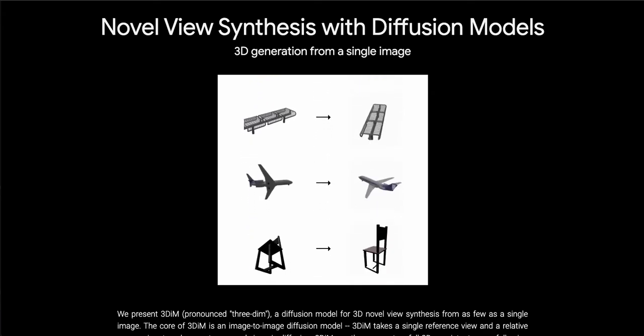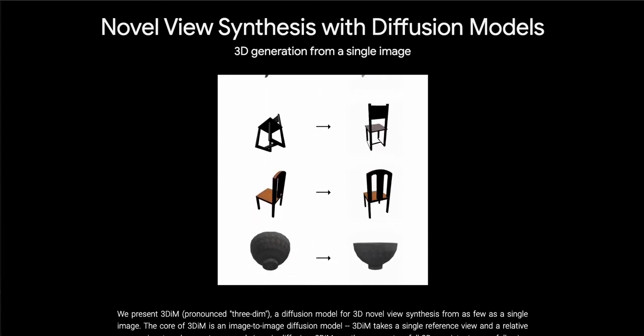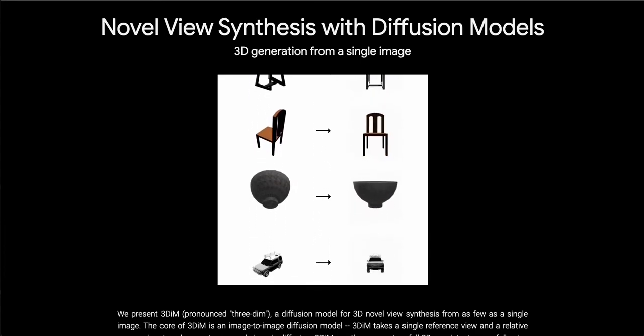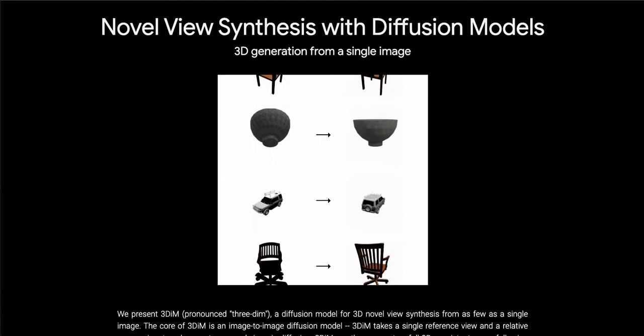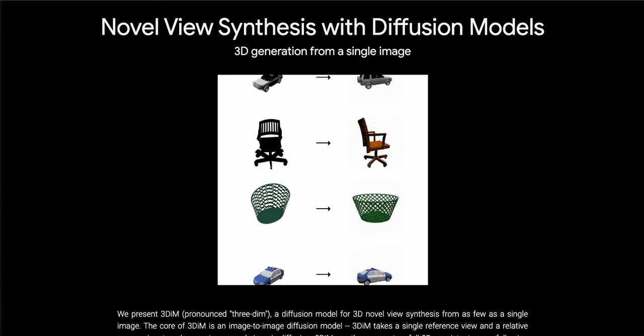So this isn't a text-to-image use of diffusion models, it's more of an iterative approach to using image-to-image diffusion. The title of this approach is Novel View Synthesis with Diffusion Models, 3D Generation from a Single Image.